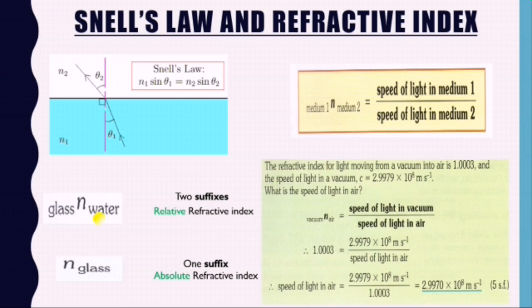The word medium means the substance that the light is traveling through. When the light is going from one medium to another, the refractive index is called the relative refractive index and it will have two suffixes. For example, for light traveling from glass to water, it is written as n from glass to water.